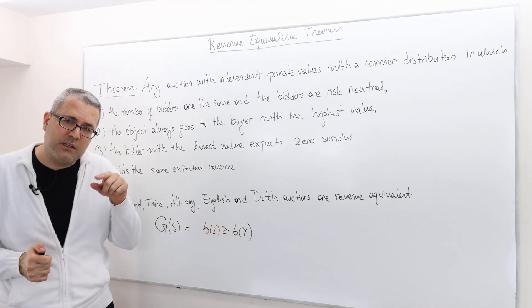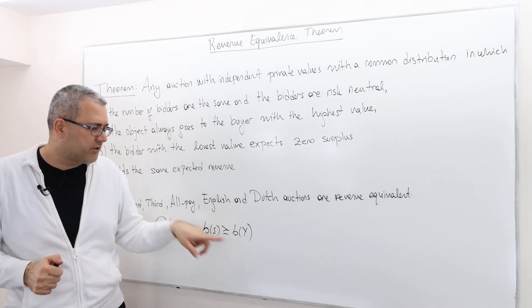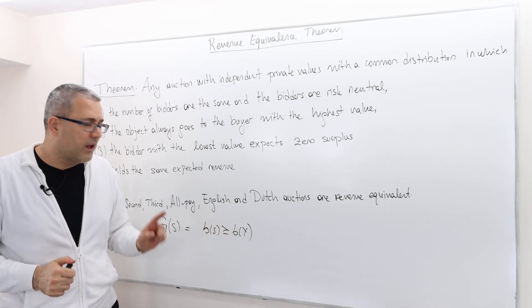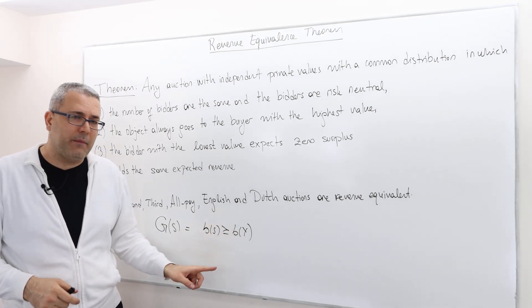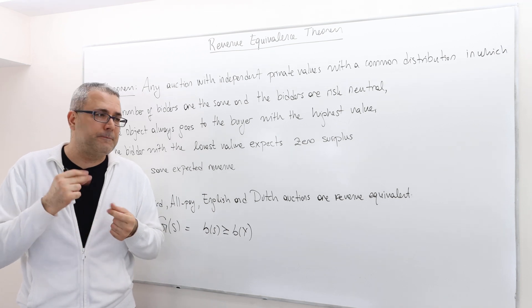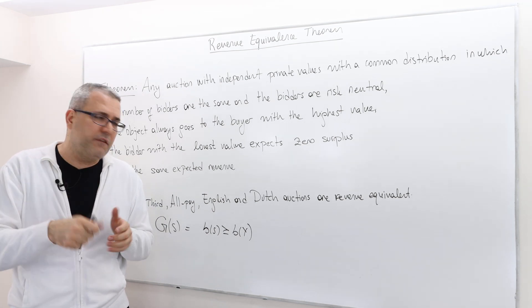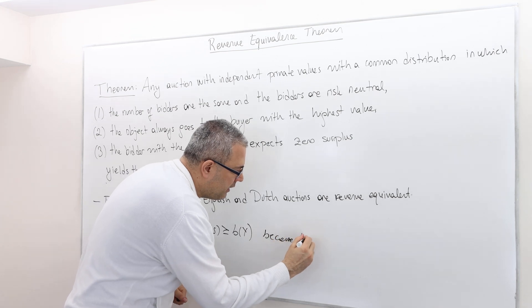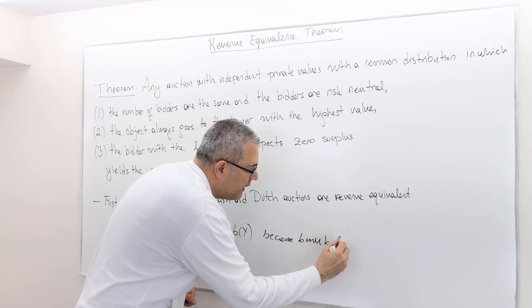So the thing is, as long as the bid function, the equilibrium bid function is increasing, and as long as it is the same for everybody, then we can just cancel them out because the bidding function is going to be linear.